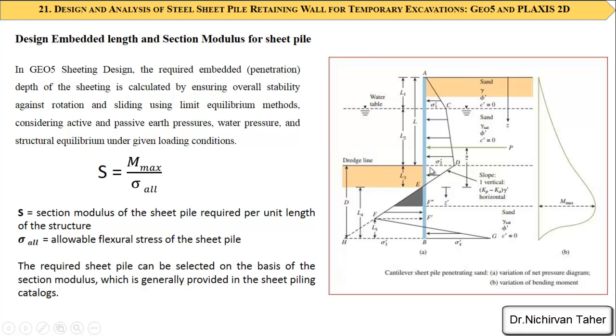Which is embedded or penetration depth of the sheet pile which is required to be penetrated into the ground. So in Geo5 we have a sheeting design program. This embedded or required penetration depth of the sheet pile is calculated based on ensuring overall stability against the rotation and sliding of the pile using equilibrium method. So the active pressure and passive pressure, water pressure, and structural equilibrium under given loads is considered.